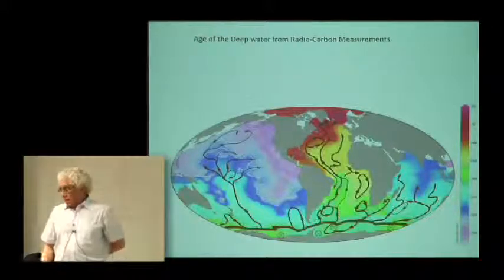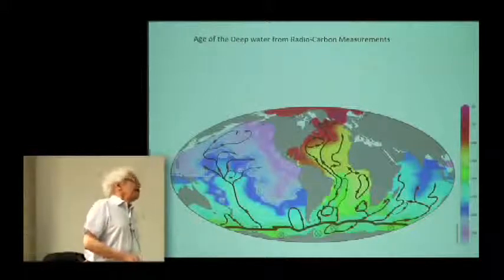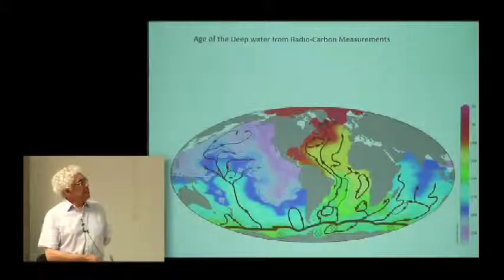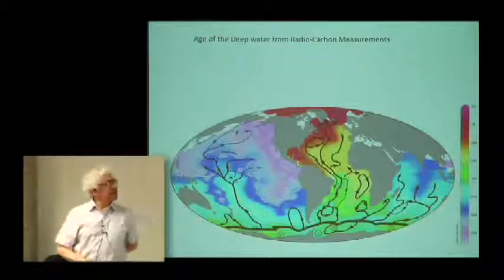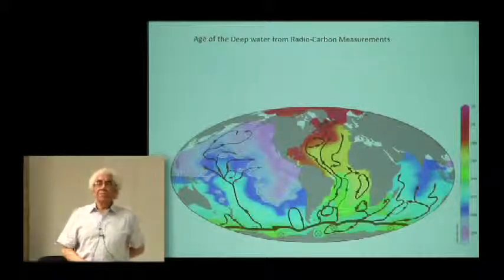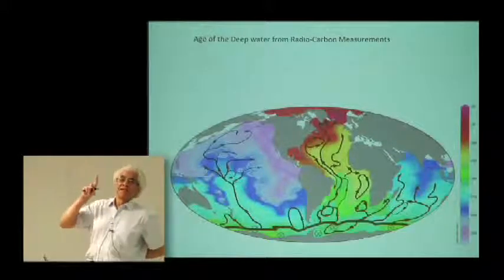Over here you get very old water. Over here fairly young. People infer the circulation for the ocean, sinking in the North Atlantic, going down. The color bar is in years. Around here is 1000, around 200 years. It's about 800 years is the oldest water in the ocean. When you're saying age of water, it's when it last was at the surface.